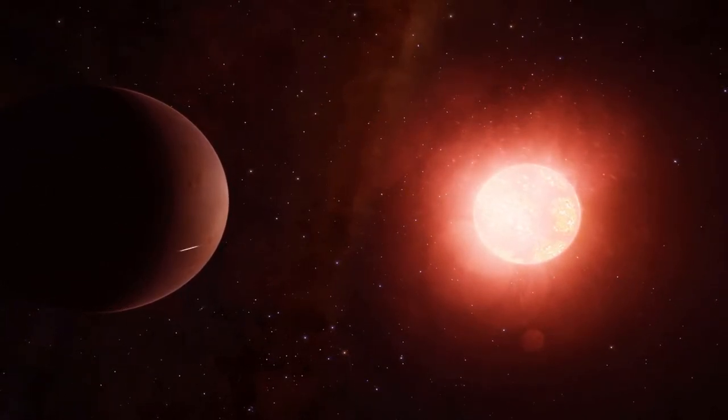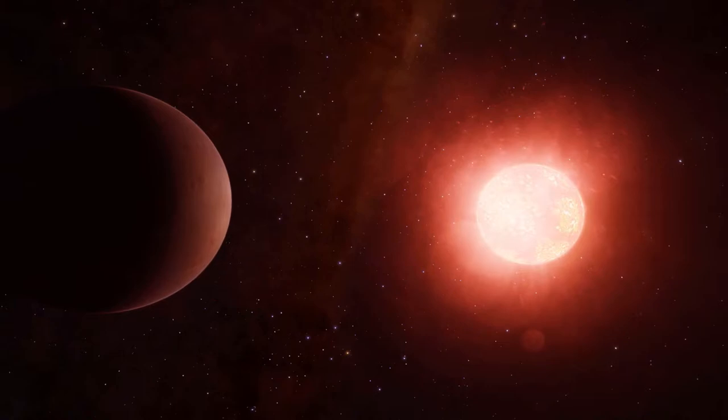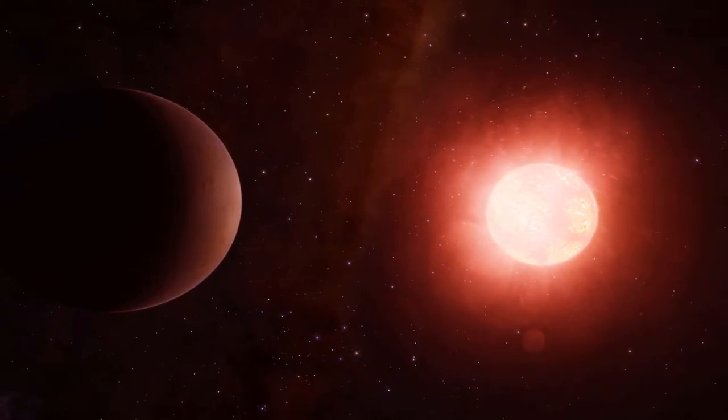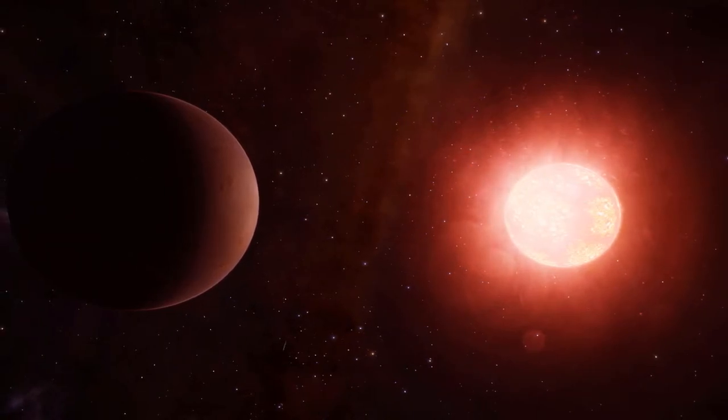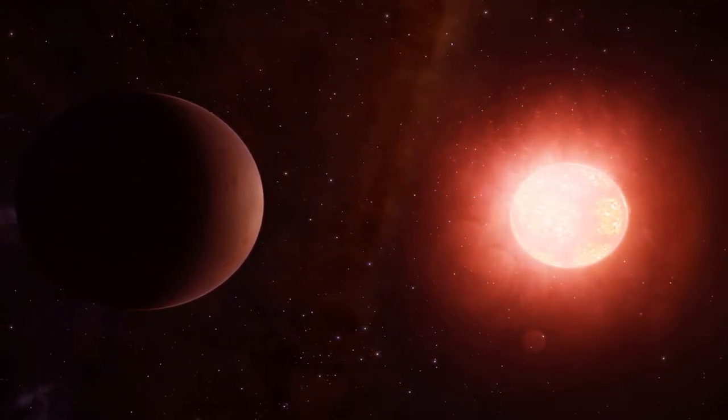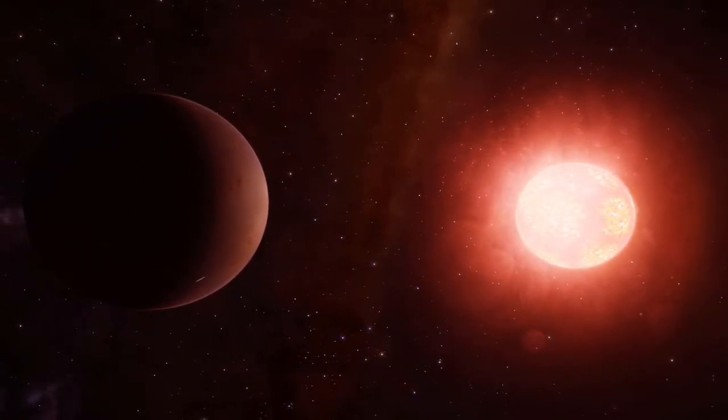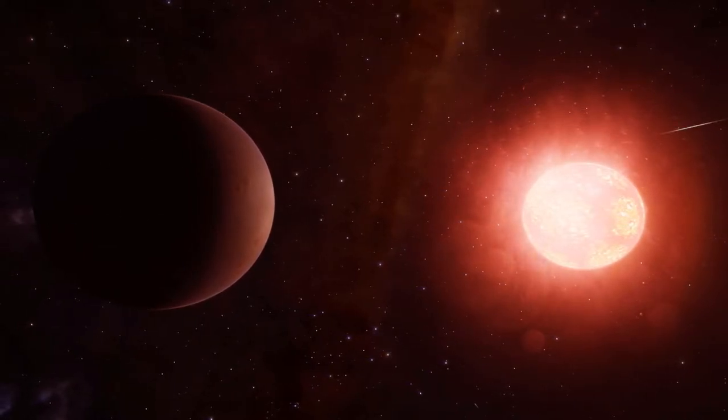An astronomical unit (AU) is the average distance between Earth and the Sun, which is about 93 million miles or 150 million kilometers. So, Proxima Centauri b is 20 times closer to its sun than the Earth to our Sun.